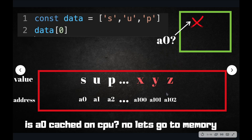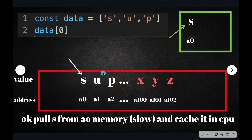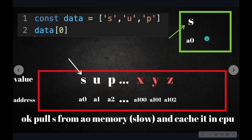Going to memory is actually slow. So before we jump to memory, the CPU checks: do I have this A0 address cached in the CPU? Well, I never visited this address before, so no. I have to take the hit and go to memory — that is a slow operation. I hit the memory, go to A0, go through the bus and motherboard, retrieve the value S, and then cache it at one of the cache levels in the CPU. So now memory location A0 is S, and I've stored it.